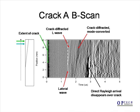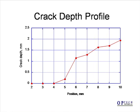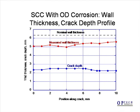We also observe a mode-converted arrival. Using the B-scan data and the measurement scheme described earlier, we have plotted the crack depth versus position. The crack deepens along the scan and reaches a depth of 2 mm at the end of the scan. We scanned another crack at a position where there was significant OD corrosion, and we were able to measure the wall thickness along with the crack depth. This enables a realistic determination of the crack depth as a fraction of the remaining wall.